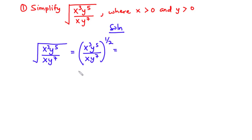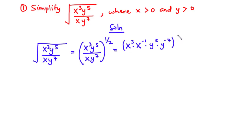We can further express this as x exponent 3 — and because x is in the denominator with exponent 1, we write x exponent negative 1 — times y exponent 5, times y exponent negative 7, all to the exponent 1 over 2. Simplifying: x exponent 3 minus 1 equals x exponent 2, and y exponent 5 minus 7 equals y exponent negative 2, so we have x exponent 2 times y exponent negative 2, all to the power 1 over 2.